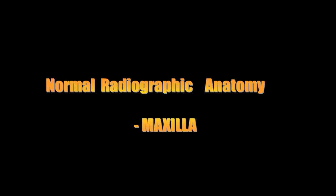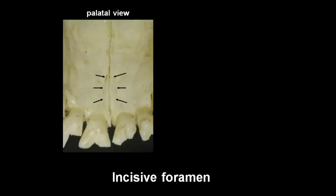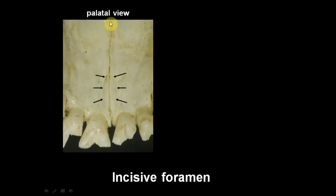Moving on to the anatomical landmarks seen in the maxilla, divided by region. In the maxillary incisor region, the first structure is the incisive foramen. In the palatal aspect of the skull, between the two central incisors in the midline, there is a depression within the suture line. The suture line is the median palatal suture or intermaxillary suture, extending from the alveolar crest posteriorly to the hard palate. In the radiograph, you see it as a radiolucent outline, sometimes with an ill-defined or well-defined radiopaque outline surrounding it, seen bilaterally within the middle third to apex region of the central incisor roots.